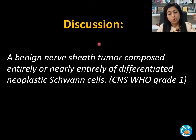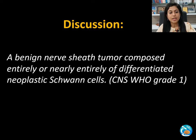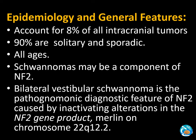Coming to discussion: schwannomas are benign nerve sheath tumors composed entirely or nearly entirely of differentiated neoplastic Schwann cells, and these correspond to CNS WHO grade 1. Schwannomas account for 8% of all intracranial tumors, and 90% are solitary and sporadic.